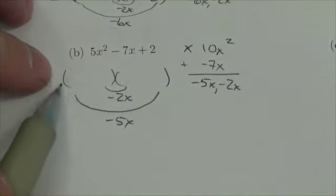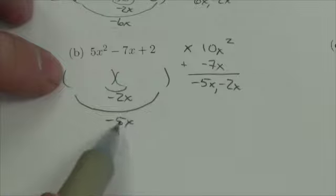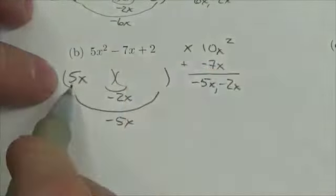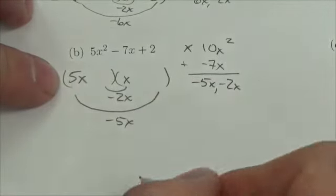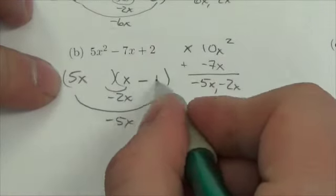So this term right here up front is a factor of both that and that. So what's it going to be? Well, the best number we can plug in there is 5x. And if that's true, if this is 5x, that makes this x. If this is 5x, that makes this back here negative 1.